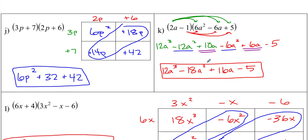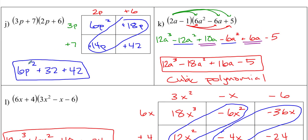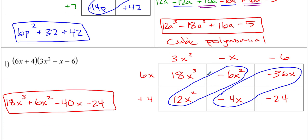Welcome back. For part k, I double distributed: first term times each of the three terms, then second term times each of the three terms, then combined like terms. We end up with 12a cubed minus 18a squared plus 16a minus 5 - four terms, which is a cubic polynomial, in standard form counting down. For the second one using the box method, there's a diagonal pattern of terms you can combine, and we end up with another cubic polynomial.